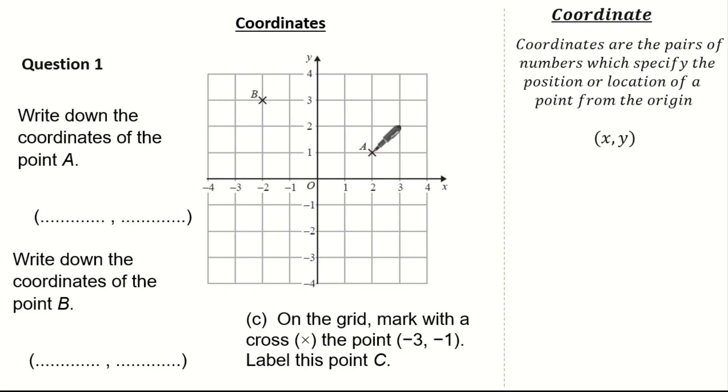Well, to work out coordinate a remember, we have to go along first and then up or down second always starting from the origin. So, starting from the origin we've gone across 2 then up 1. So therefore our coordinate is 2, 1.